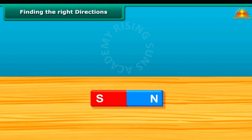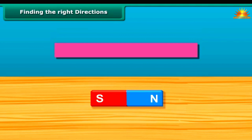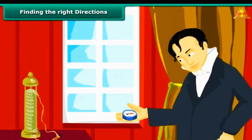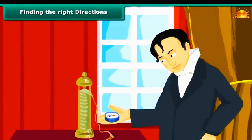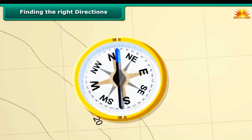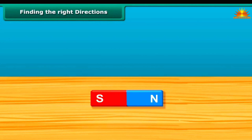Finding the right directions. Once you know about the poles of a magnet, you should also be able to mark the location of the poles. Let us now look at why poles are important to be marked in a magnet. We all know that to find directions, we use a compass. This compass has a needle that keeps moving in all directions, but when steadied, always points to the south. This helps us in finding directions accurately. This is why we need to mark the poles of a magnet.